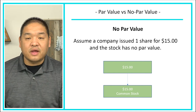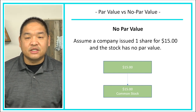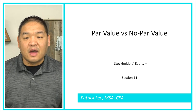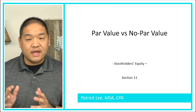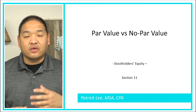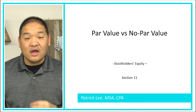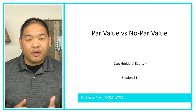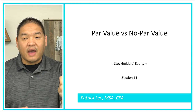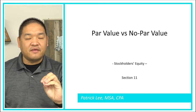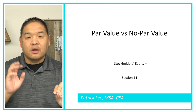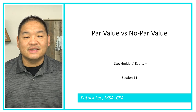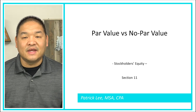That's our quick look at par versus no par. We will look at the journal entry later when we start talking about the sale of shares. To summarize: if you have a par value, you separate the par value amount from everything else — par value goes to common stock, and the rest goes into additional paid-in capital. If there's no par value, everything goes into common stock.